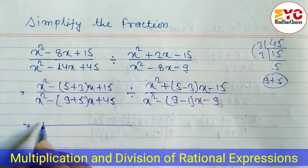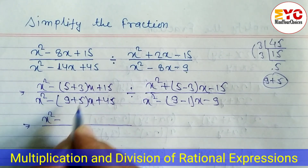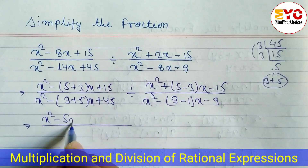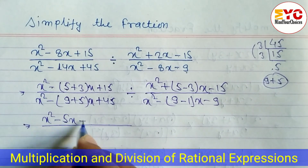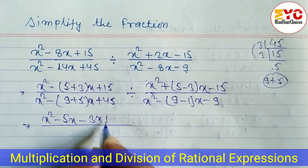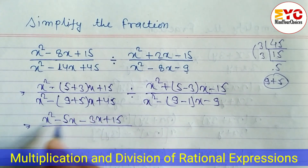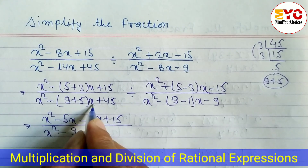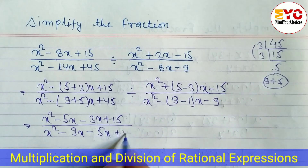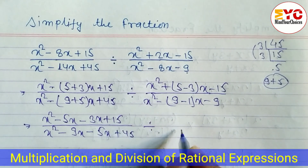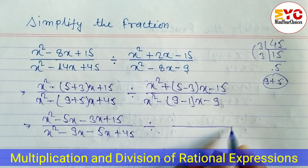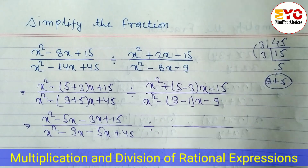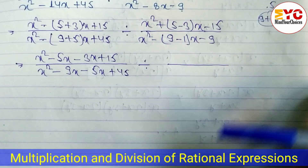Now let's open the brackets: x² − 5x − 3x + 15. Similarly in the denominator: x² − 9x − 5x + 45, divided by — we can change this division into multiplication after one or two steps.